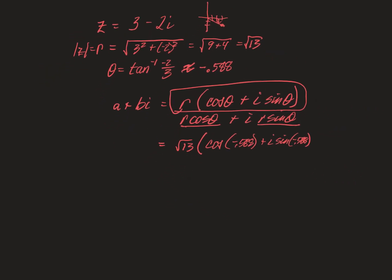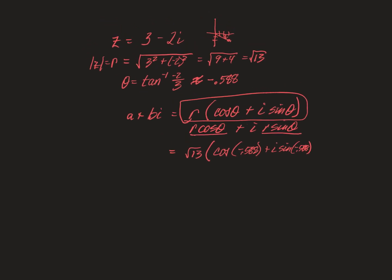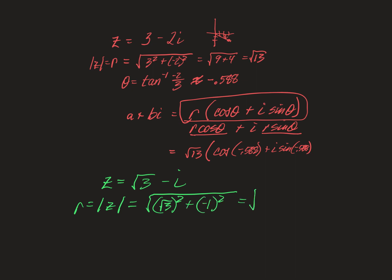Now let's do one where we get an exact angle. Let z equal square root of 3 minus i. We want to write this in polar form. The modulus of z, which is r, is equal to the square root of (√3)² plus (−1)², which equals the square root of 3 plus 1, which is the square root of 4, or 2.